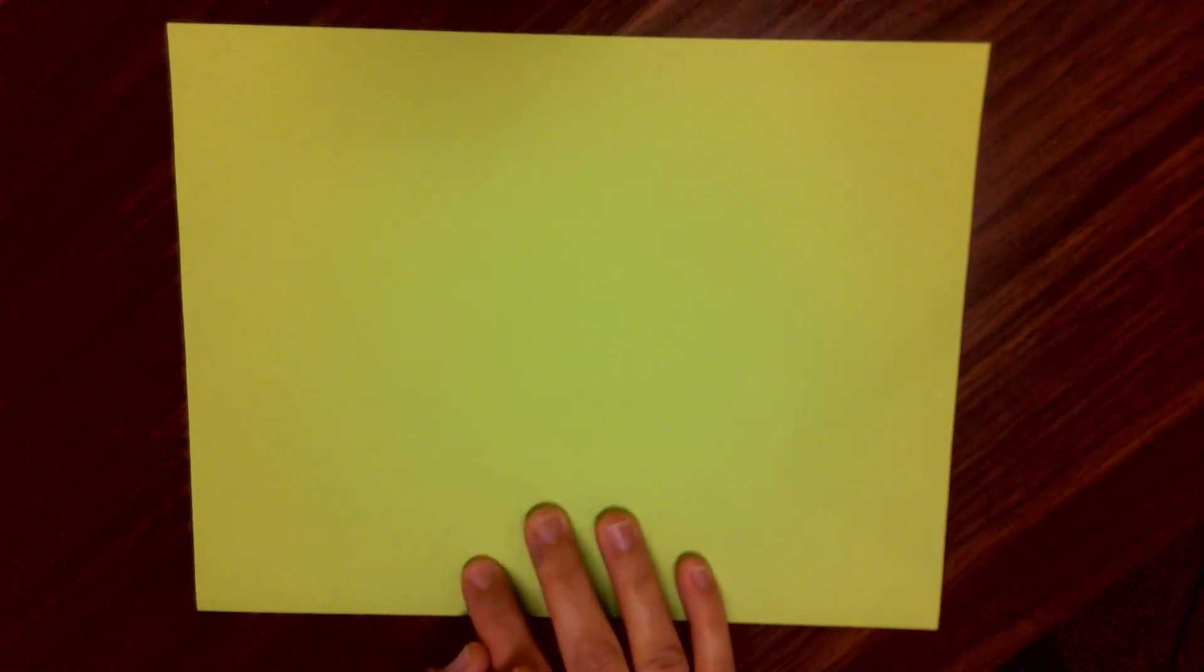Just grab a piece of paper from your science notebook. It doesn't matter. It has to be rectangular. It can be a square too, but it's better to have a rectangular to make it even and a little longer airplane.